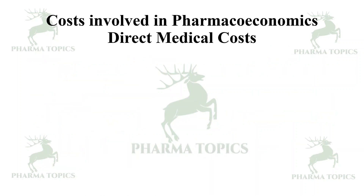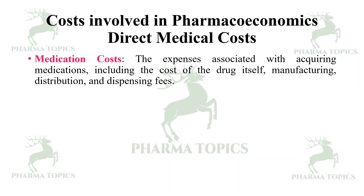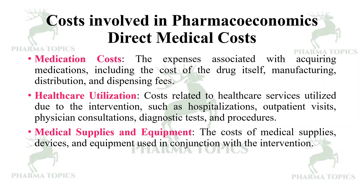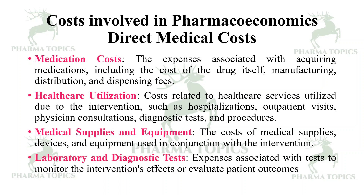Let us see the costs involved in pharmacoeconomics. First is direct medical costs. Medication costs are a direct cost — the expenses associated with acquiring medications, including the cost of the drug itself, manufacturing, distribution, and dispensing fees. Then healthcare utilization costs, related to healthcare services utilized due to interventions such as hospitalizations, outpatient visits, physician consultations, diagnostic tests, and procedures. Then medical supplies and equipment costs, and laboratory and diagnostic test expenses associated with monitoring intervention effects or evaluating patient outcomes.